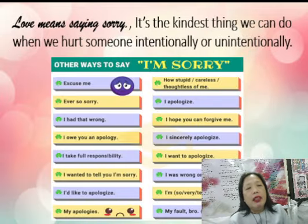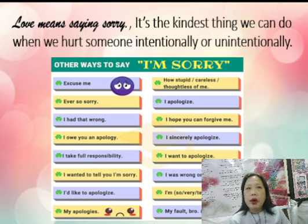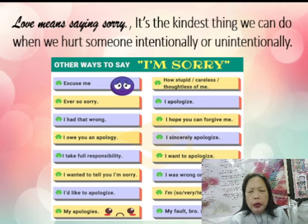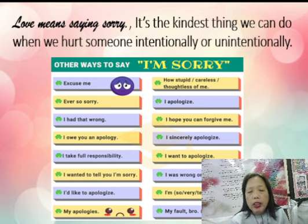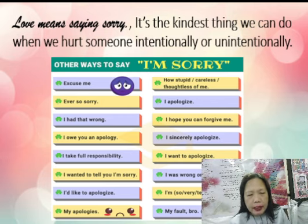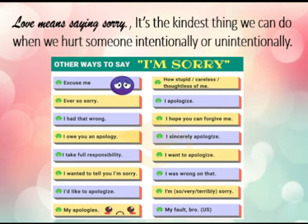Love means saying sorry — it's the kindest thing we can do when we hurt someone intentionally or unintentionally. And some sorries are just words. From englishasasecondlanguage.com, there are so many words or sentences that express 'I'm sorry': Excuse me. Ever so sorry. I had that wrong. I owe you an apology. I take full responsibility. I wanted to tell you that I'm sorry. I'd like to apologize. My apologies. How stupid and careless or thoughtless of me. I apologize. I hope you can forgive me. I sincerely apologize. I want to apologize. I was wrong on that. I'm so very terribly sorry. My fault. My bad. Bro, I'm sorry.